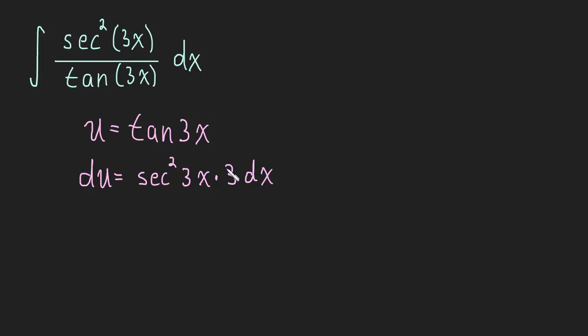This constant 3, we don't want that there because it's not in the numerator, so we're just going to divide over, and we'll get 1 third du is equal to secant squared of 3x dx.